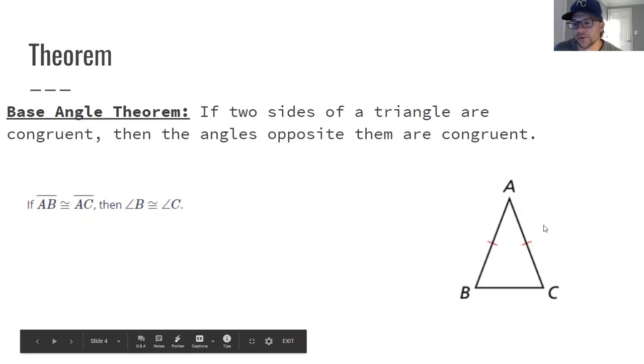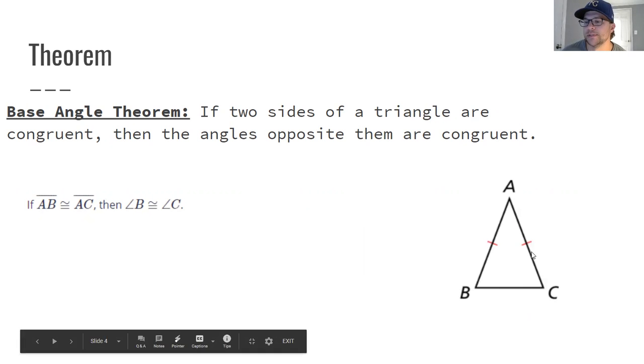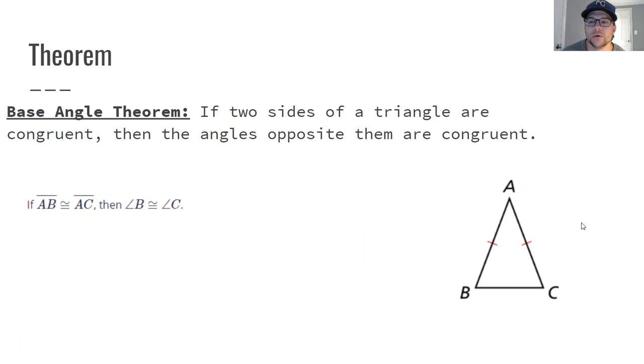Base angle theorem. If the two sides of a triangle are congruent, then the angles opposite them are congruent. So in this specific triangle, you have line AB congruent to line AC. Angle B would be congruent to angle C. Those two are going to be congruent to each other.